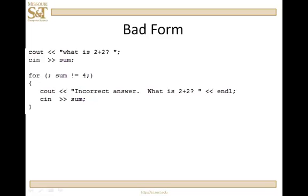Let's take a look at some examples. I'm going to start with bad form. This is a prime example — the person has created an empty expression one and an empty expression three. Does that mean it won't work? Actually not; it can still work. In this case, expression one has nothing to execute. We check to see if sum not equal to four is true or false. If it's true, we execute the body of the loop — a cout and a cin.